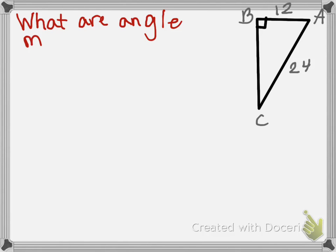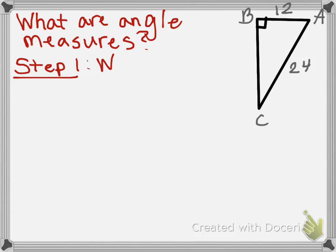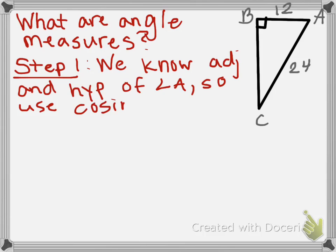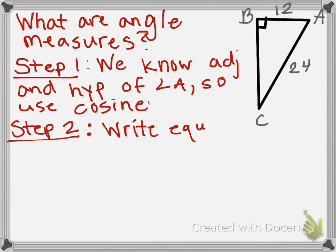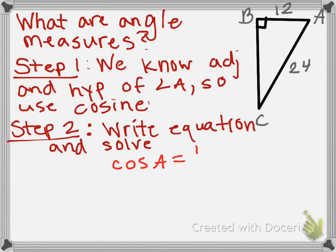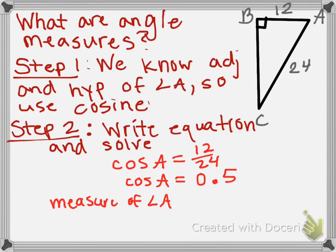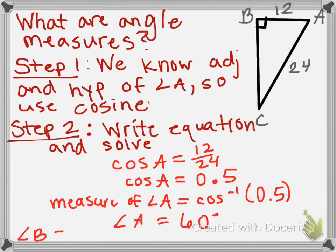Using this triangle at the right, what are the angle measures? Step one — we know the adjacent and hypotenuse of angle A, so we are going to use cosine. We are going to write our equation: cosine of A equals 12 over 24. So the cosine of A equals 0.5. Now we are going to set that equal to the measure of A. So the measure of A is going to equal the inverse cosine of 0.5. Because we are working backwards, we are using the inverse. So angle A is 60 degrees.